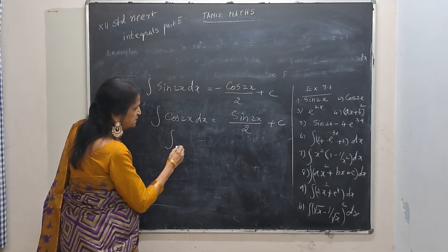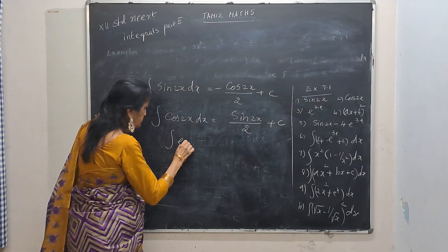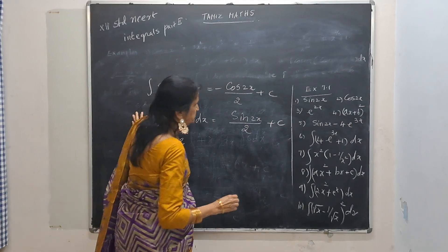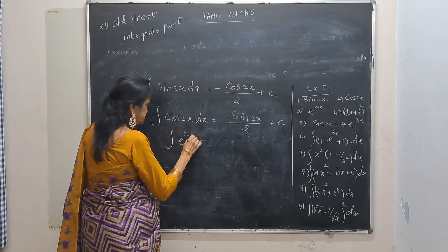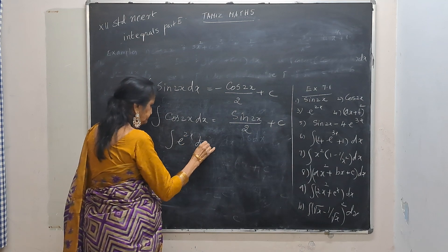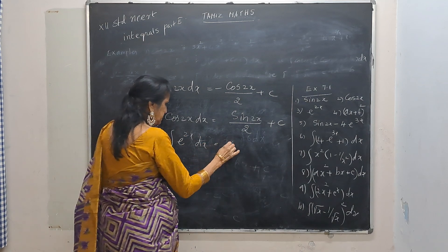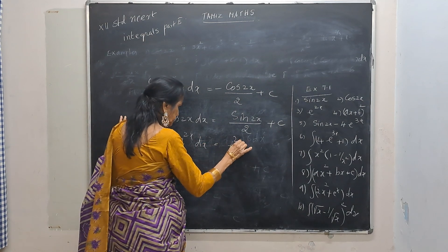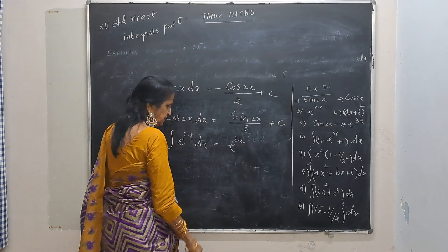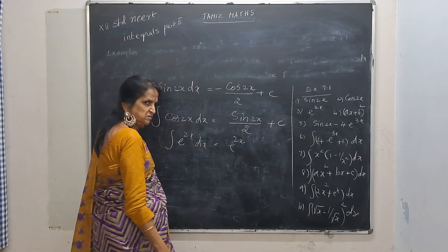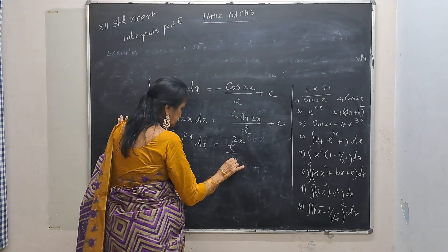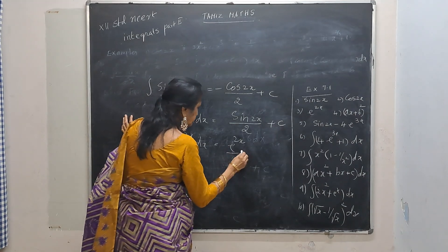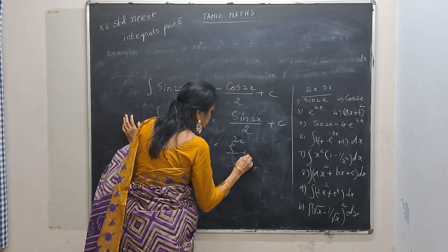Next is: integrate e to the power 2x. I can't integrate that directly now — so divide by 2, giving e to the power 2x divided by 2, plus c.